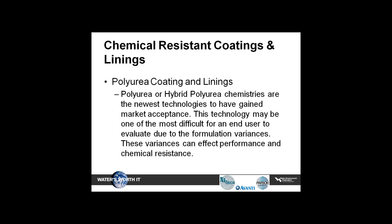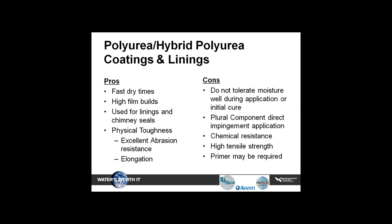Polyurea coatings and linings have been the newest technology but have been around for a while. There are so many different formulations that can affect chemical resistance. The pros are they're very fast dry, have very high film build, are used for linings and chimney and knee seals, are physically tough with very good abrasion resistance, and very good elongation up to 530%. The cons are they don't tolerate moisture at all and must be applied with plural component equipment which is sometimes bulky. Although there has been some robotic plural component in the market, some have very poor chemical resistance, depending on formulation. A primer is generally always required.